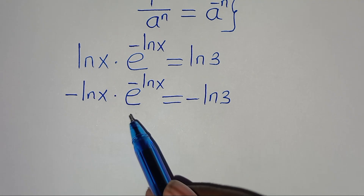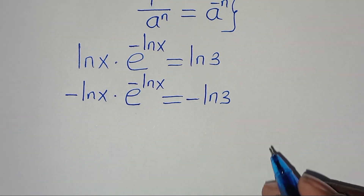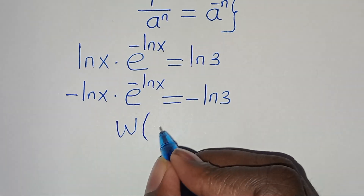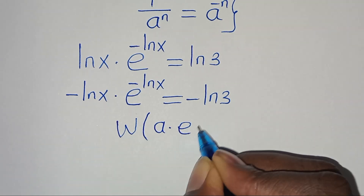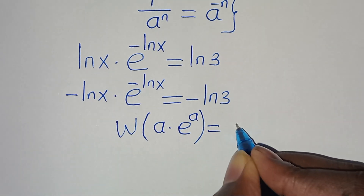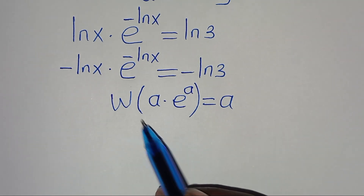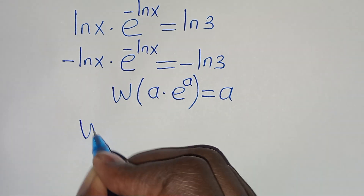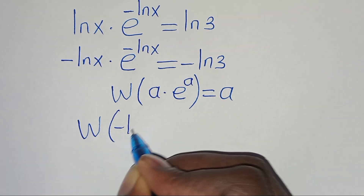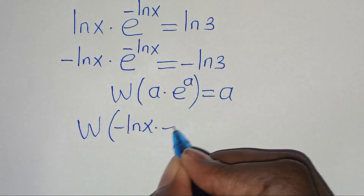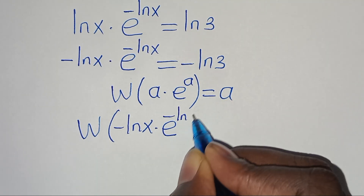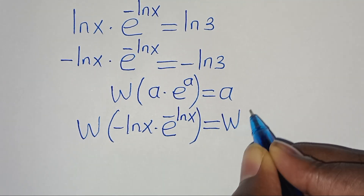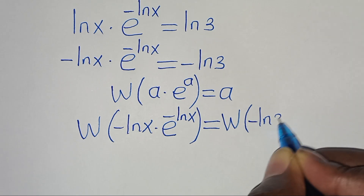Now we can apply the Lambert W function. Applying the Lambert W function on both sides, we have the Lambert W function of minus ln(x) multiplied by e to the power of minus ln(x), equal to the Lambert W function of minus ln(3).